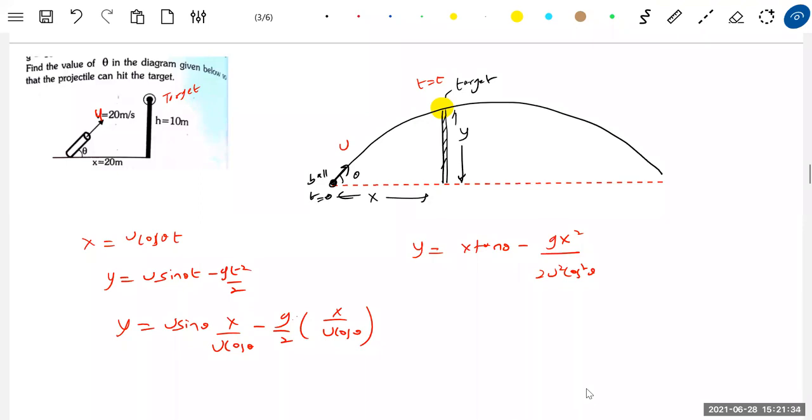y equal to 10, 20 tan theta, 10 times 20 square, 2 times 20 square cos square 45 degrees only. Yeah, I think Pranay, Vishal, everyone concluded 45 degrees.